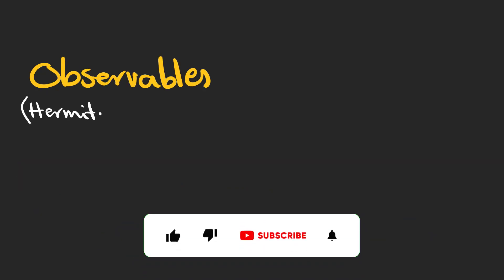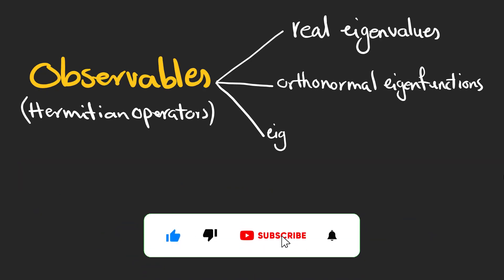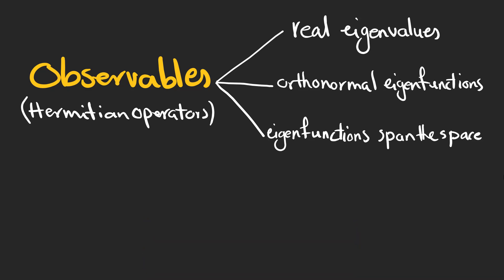In the next video, I'll talk about the statistical interpretation of this framework. But for now, all we need to know is that observables in quantum mechanics are Hermitian operators with real eigenvalues, and their eigenvectors are orthonormal and complete.